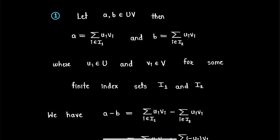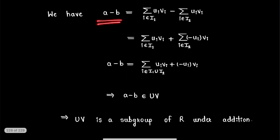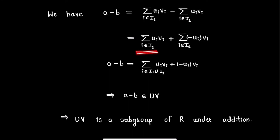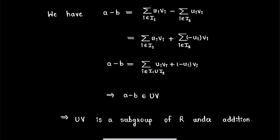Here i1 and i2 are some finite index sets. Then we have a minus b equals summation u_i v_i for i in index set i1, minus summation u_i v_i for i in index set i2, which equals summation u_i v_i for i in i1 plus summation of minus u_i v_i for i in i2. Therefore a minus b equals summation of (u_i v_i + (−u_i v_i)) where i belongs to the union of index sets i1 and i2, and this union is also finite. Thus a minus b is an element from set UV, and therefore UV is a subgroup of R under addition.